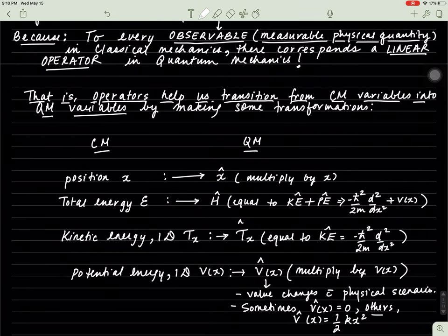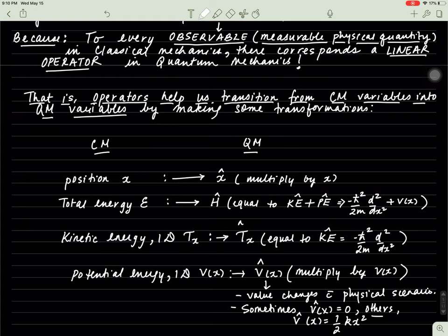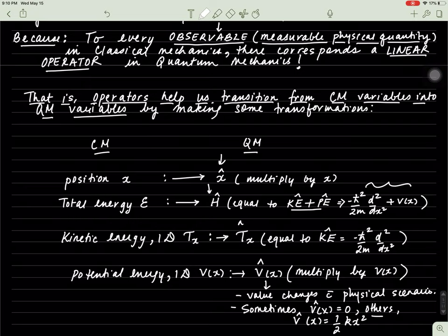Some of these transitions are as follows. The position classical mechanical variable can be written as this operator, which just means multiply by x. The total energy can be written simply as the Hamiltonian operator, which is the sum of kinetic plus potential energies. The kinetic energy is just this part of the Hamiltonian. So the kinetic energy operator, in the quantum mechanical version, essentially involves multiplying the wave function with this quantity.